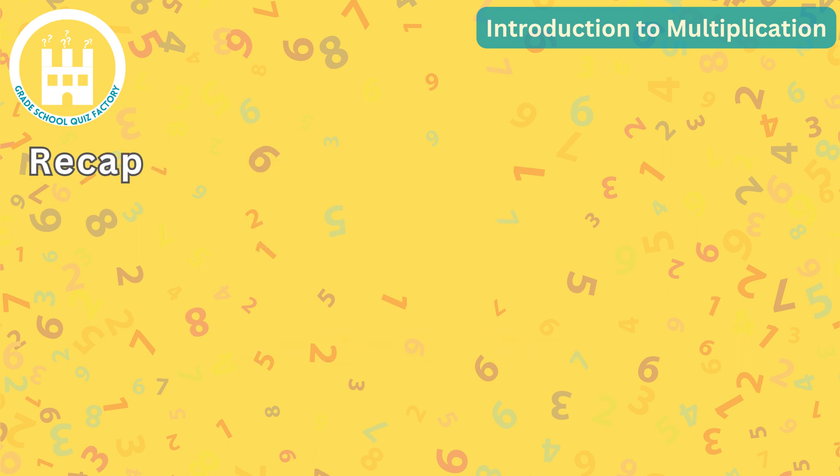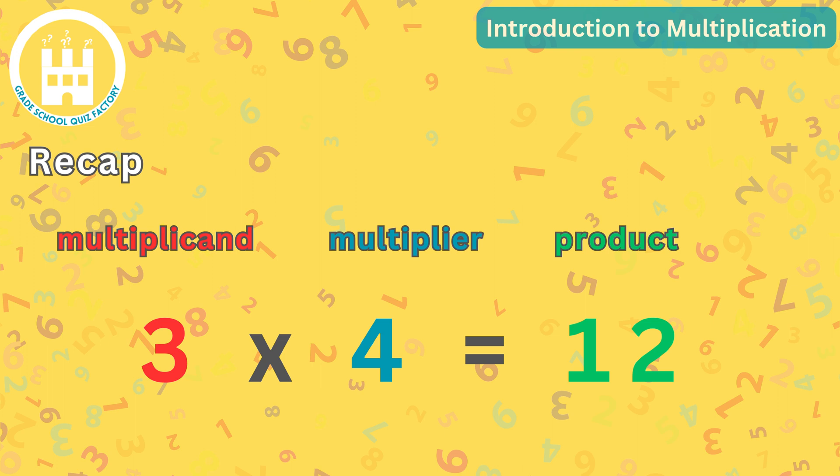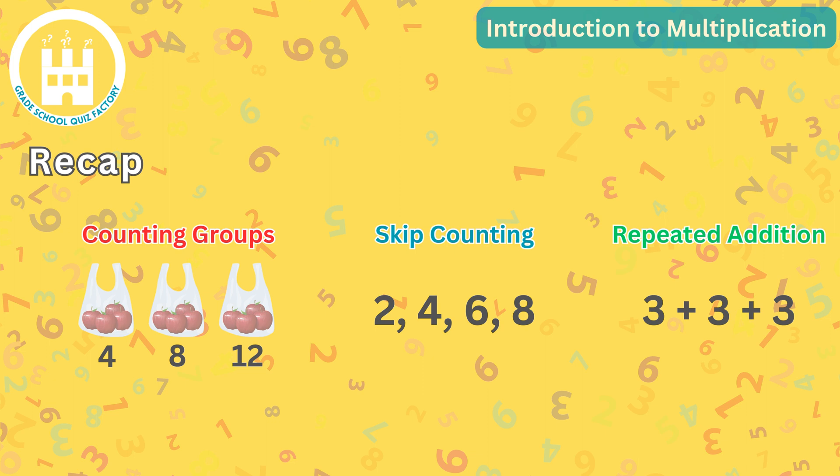Let's quickly recap what we have learned today about multiplication. Multiplication helps us combine equal groups or add repeated numbers together quickly. A multiplication problem has three parts: the multiplicand, the multiplier, and the product. We can use counting groups, skip counting, and repeated addition techniques to solve multiplication problems.